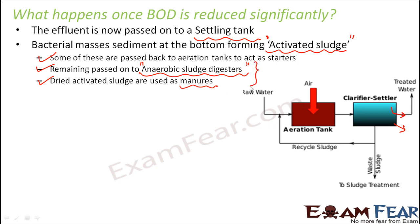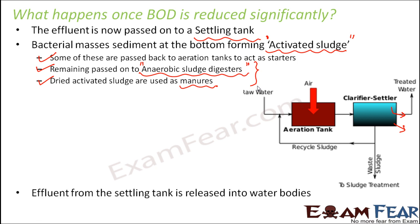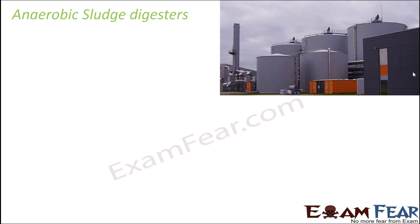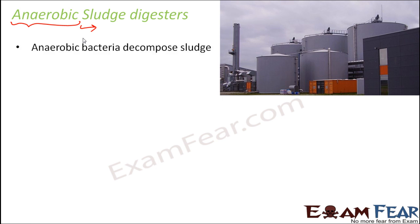Now we focus on the anaerobic sludge digester — how something can even digest the sludge. The water treated in the settling tank has very little impurity remaining. Do you notice the name anaerobic? That means this process occurs in the absence of oxygen, because aerobic means presence of oxygen while anaerobic means absence of oxygen. In these digesters, instead of aerobic bacteria, anaerobic bacteria decompose the sludge. These anaerobic bacteria, in absence of oxygen, break down the sludge into simpler forms and start digesting the sludge itself. That is why it is called anaerobic sludge digester — because anaerobic bacteria digest the sludge.